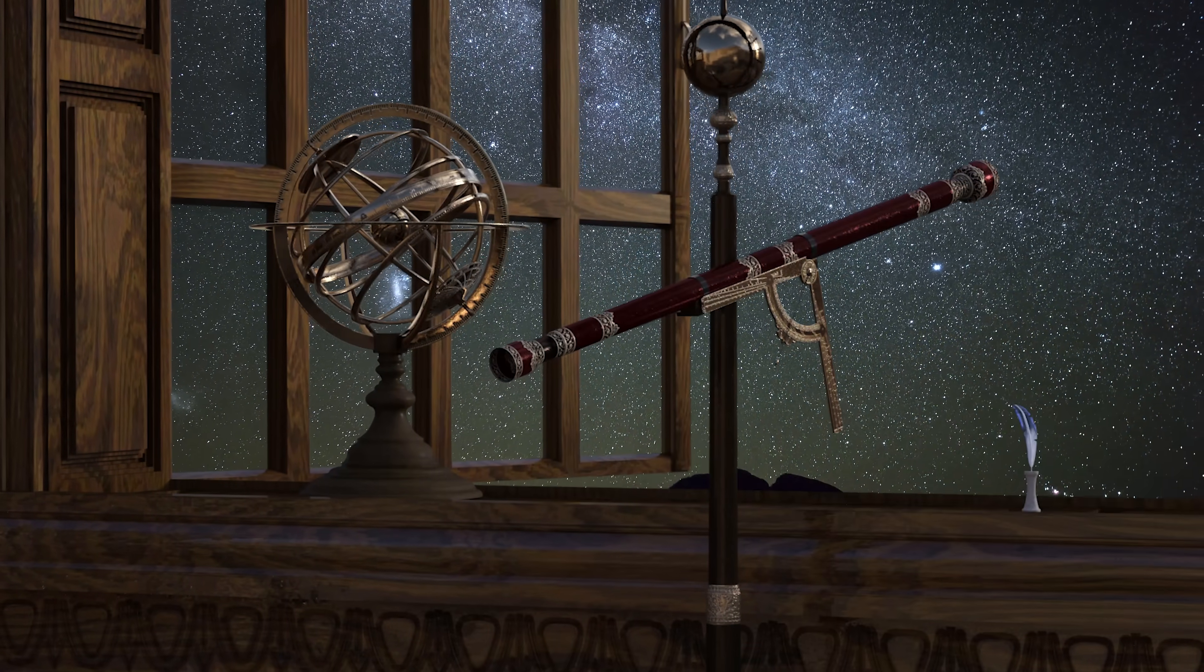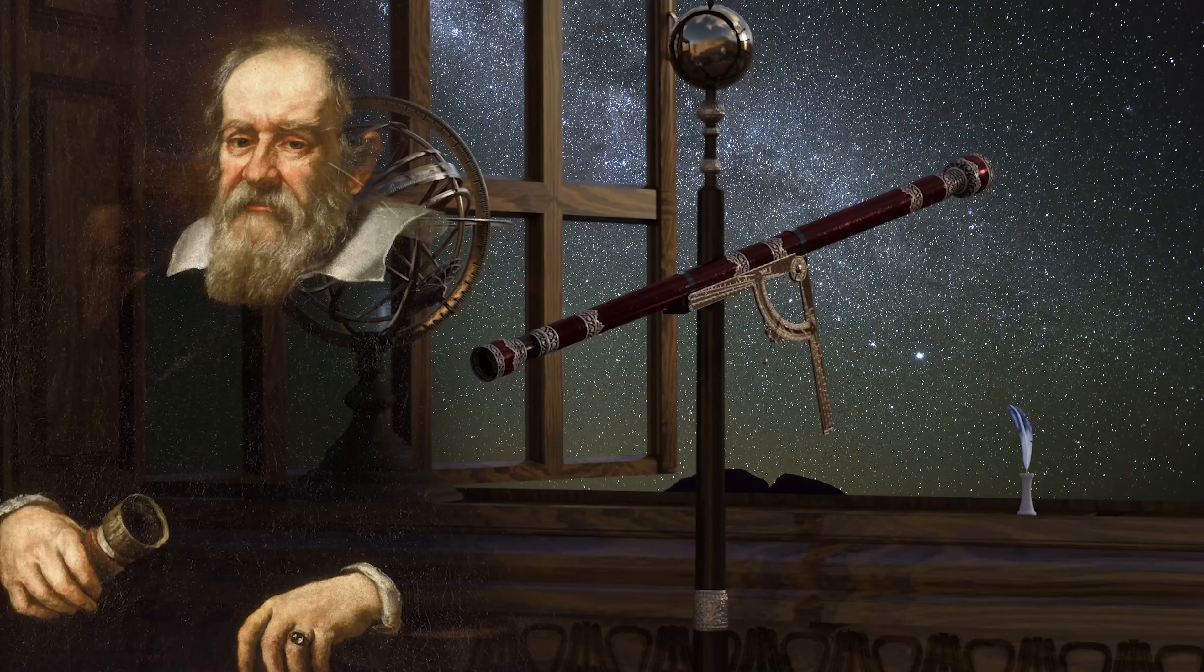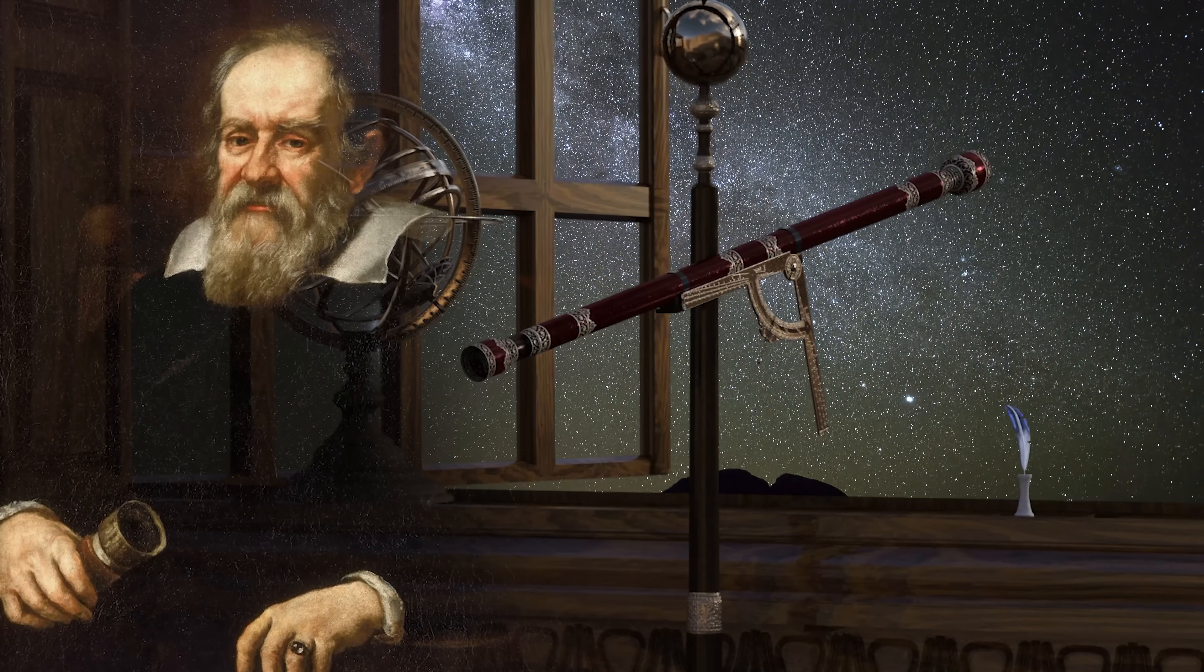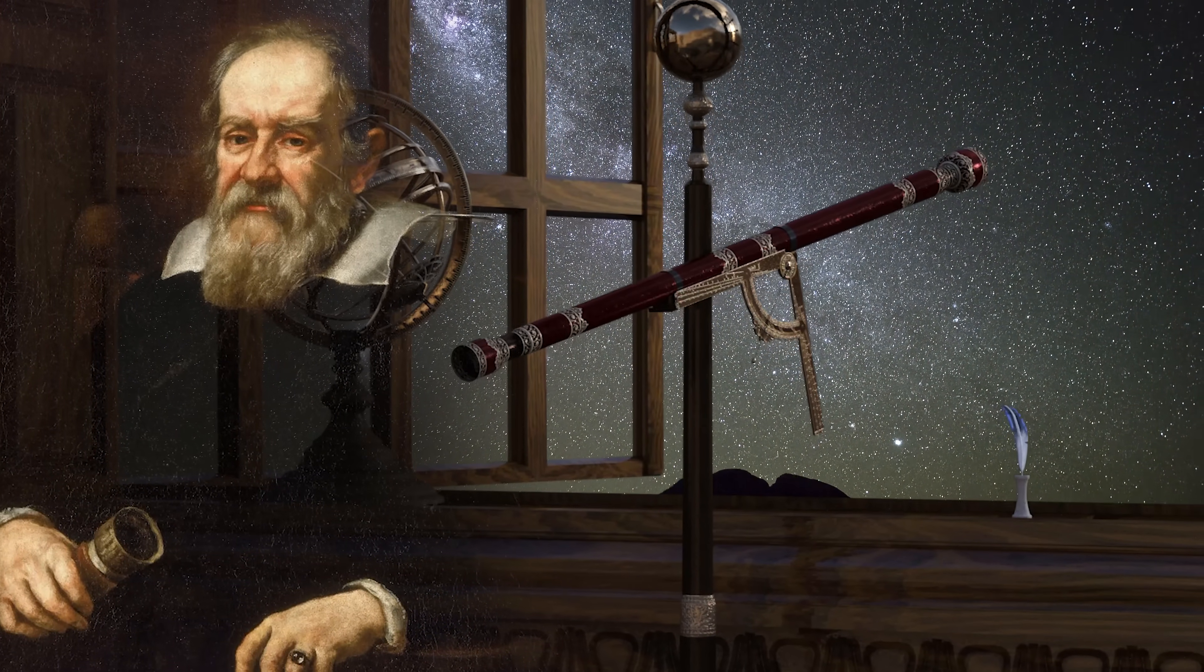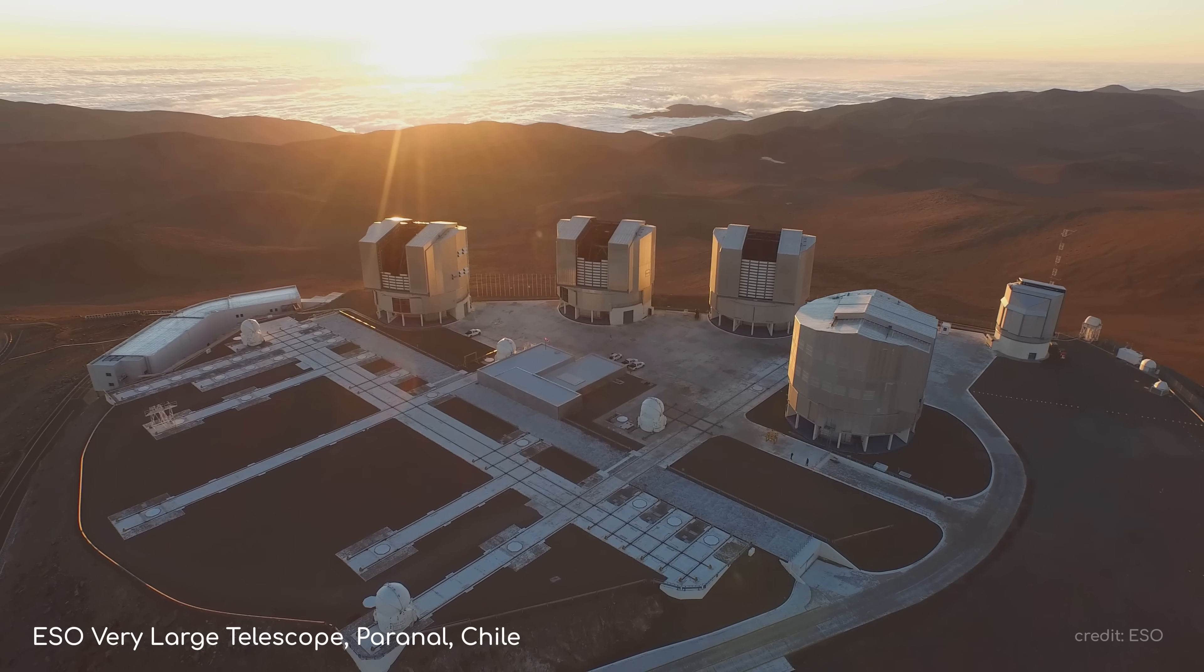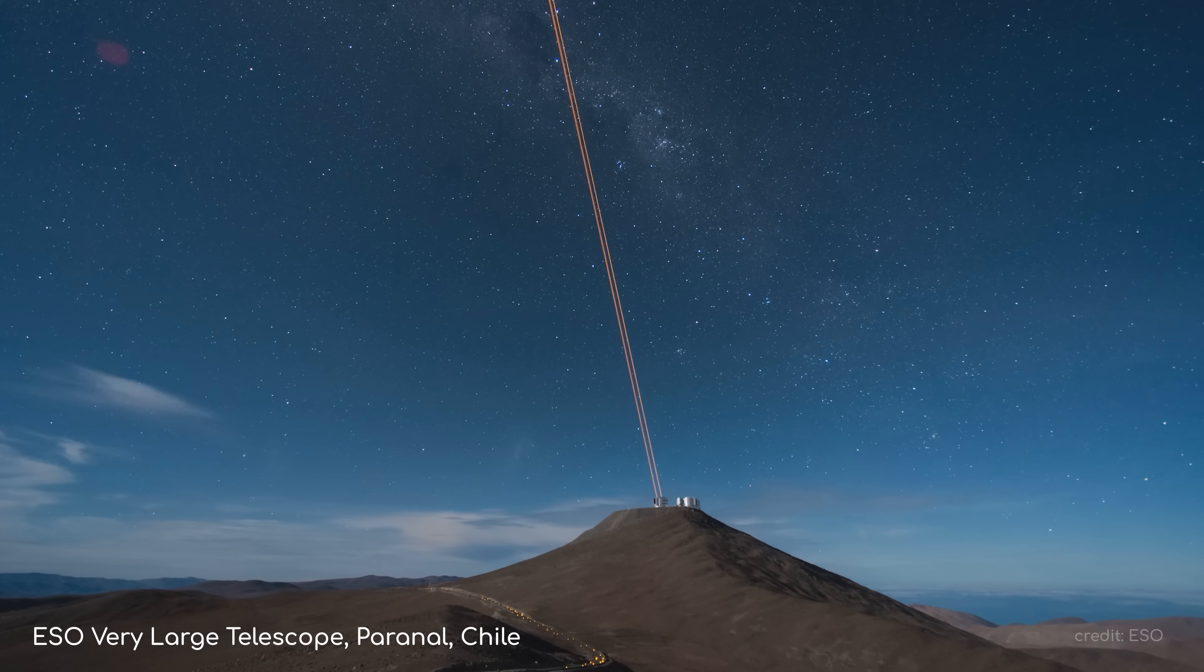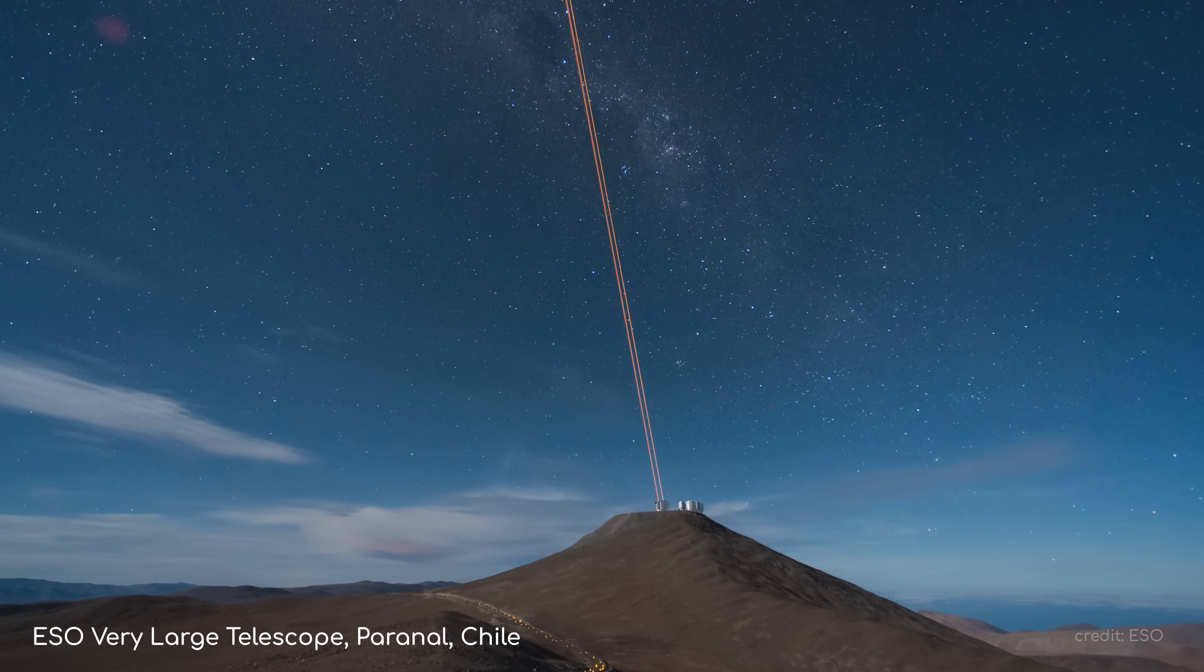Perhaps you picture an old wooden cylinder with lenses at both ends, similar to the one that Galileo Galilei first used to gaze up at the heavens and see the moons of Jupiter. Or maybe your mind is constructing a cathedral-sized dome with mirrors as big as tennis courts, like the telescopes high up in the mountains of Chile and Hawaii.